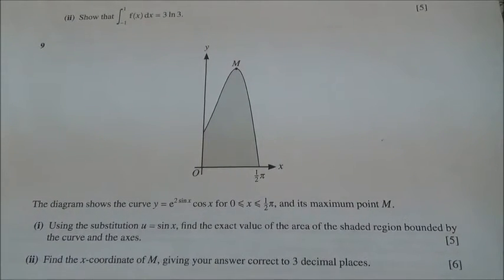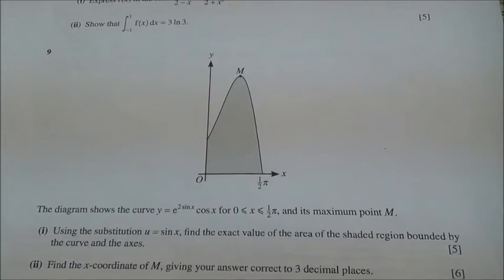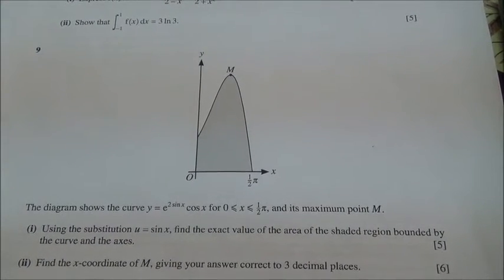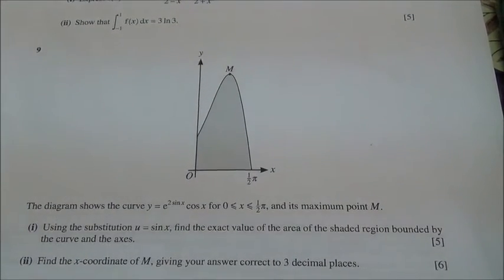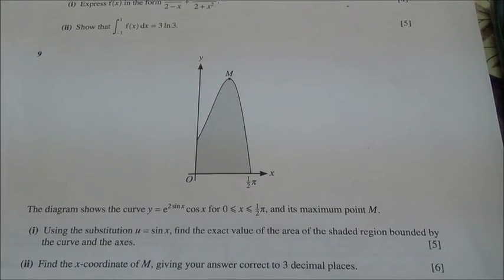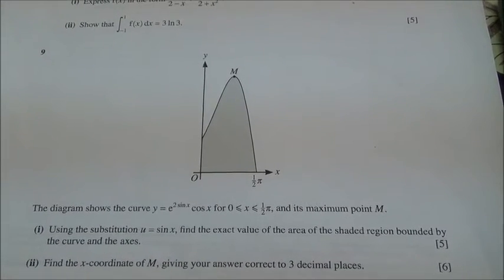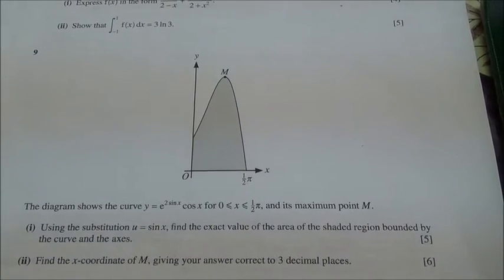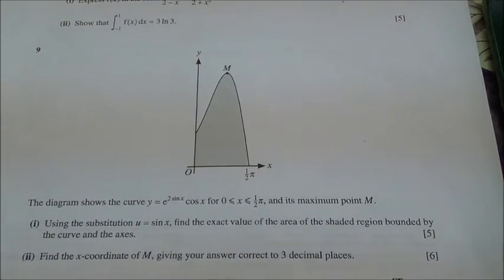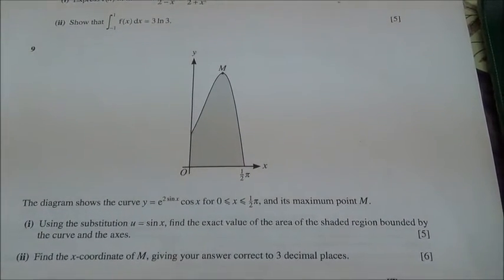Question number 9, taken from June 2014 HSC Advanced Level Maths P3. The diagram shows the curve y equals e to the power of 2 sin x times cos x, for 0 ≤ x ≤ π/2, and its maximum point m. First part: using the substitution u = sin x, find the exact value of the shaded area bounded by the curve and the axis. Second part: find the x-coordinate of m, giving your answer correct to three decimal places.